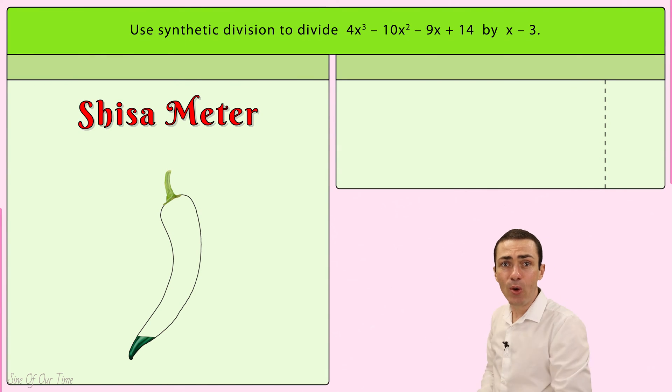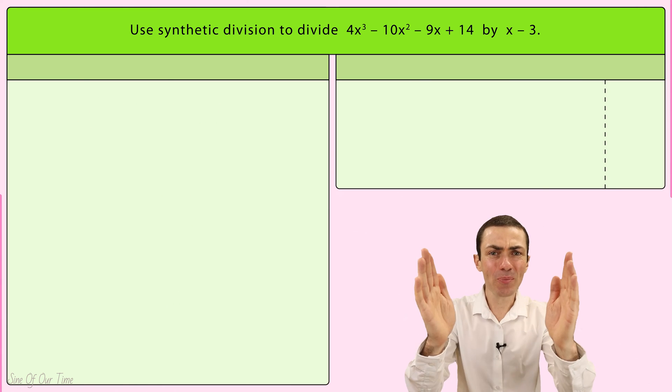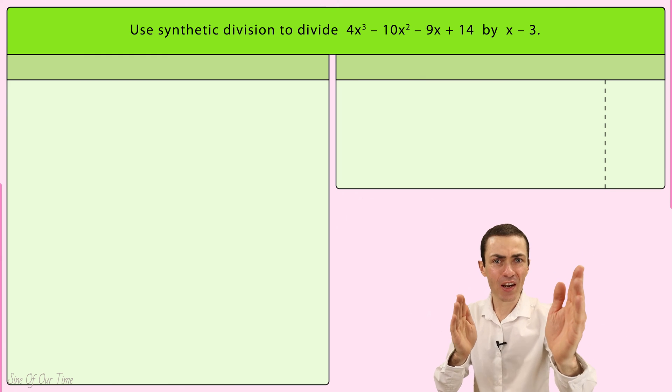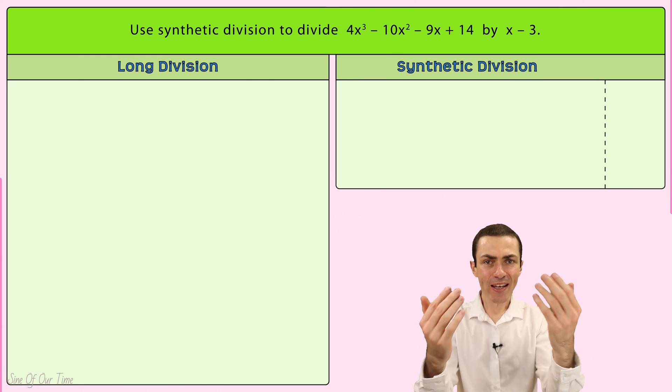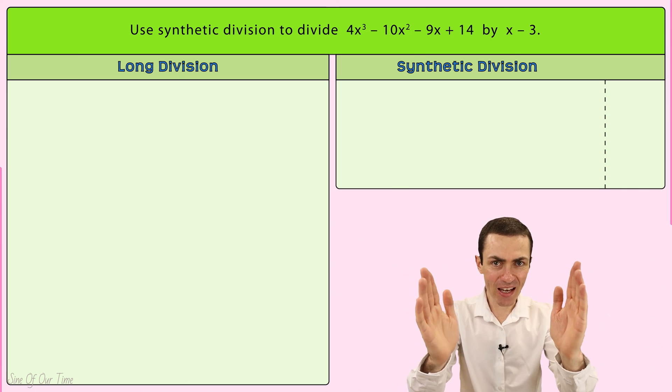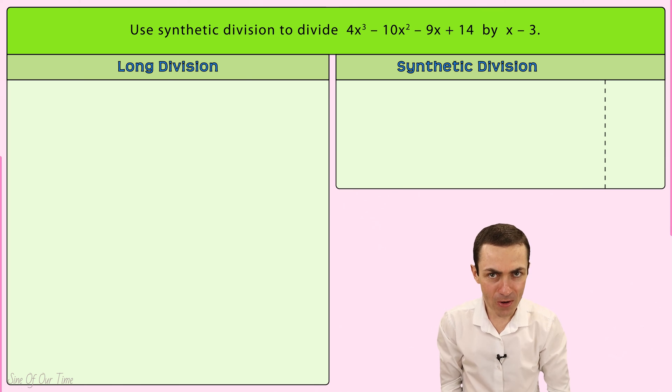For now, let's keep things straightforward by looking at this example, which as you can see from the Shisa meter, is very mild. In order to help you better understand the parallels between synthetic division and long division, let's work through this example, showing these two methods side by side. Although I'm only going to talk about the synthetic division process.